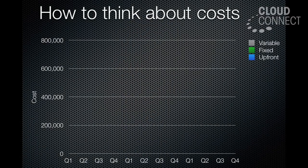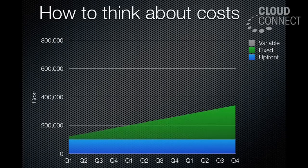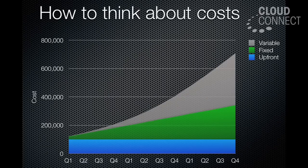Any cost model that you think of consists of three kinds of spending. You basically have upfront spending, which is the money that you have to spend to get into the game. You have fixed spending, which doesn't increase over time but adds up. And then you have your variable spending, which increases as you get more and more usage. Those three elements of cost are important for any cost analysis.